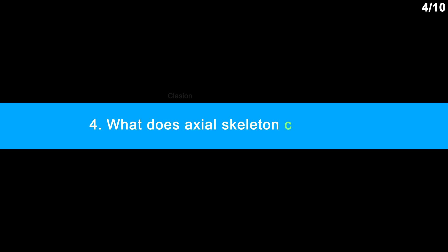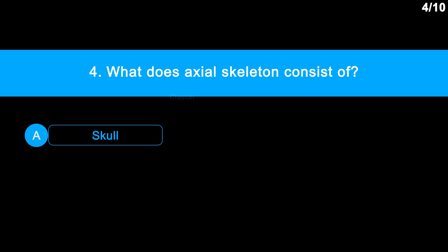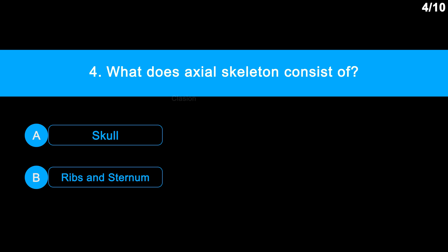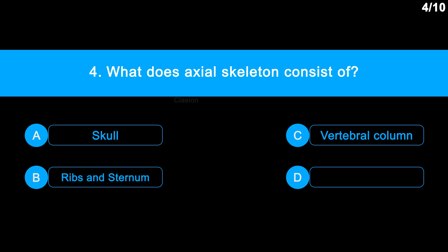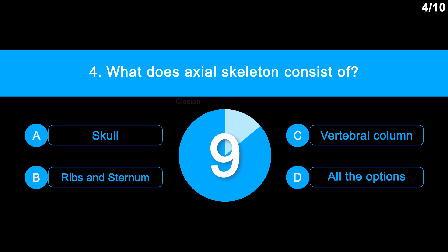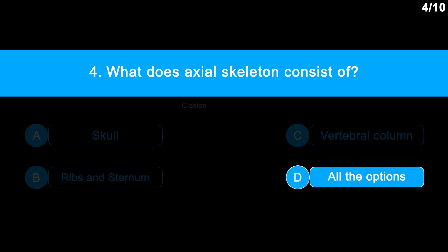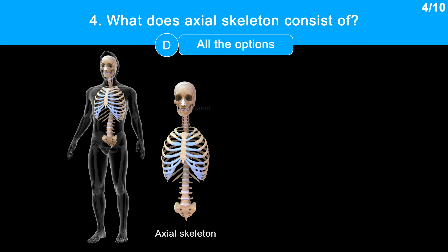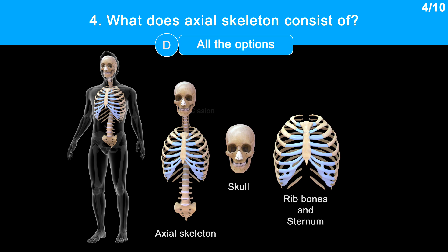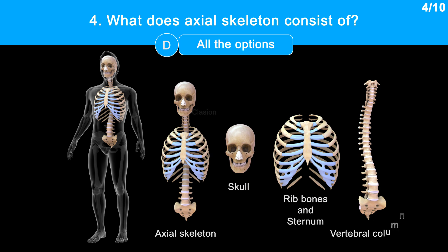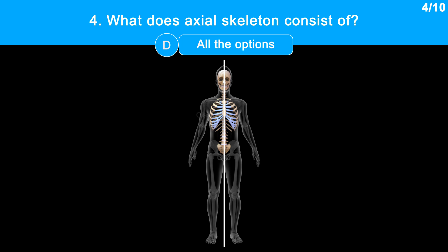Question 4: What does the axial skeleton consist of? Option A, skull. Option B, ribs and sternum. Option C, vertebral column. Option D, all the options. The correct answer is option D, all the options. The axial skeleton includes the skull, which is the bone structure of the head; rib bones and sternum, which form a cage of ribs around our chest; and the vertebral column, also known as the backbone or spine. These are situated symmetrically along the central axis of the body.